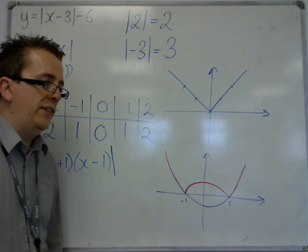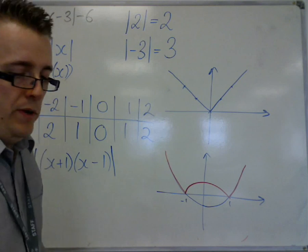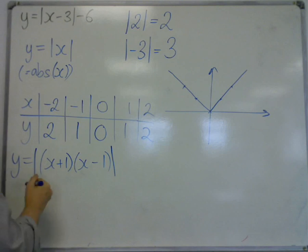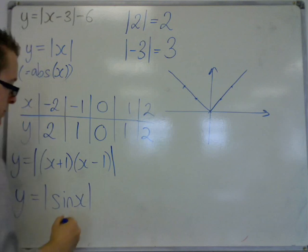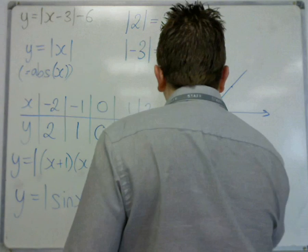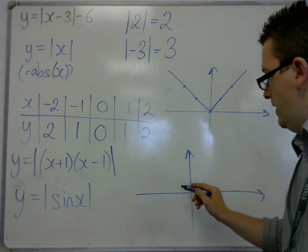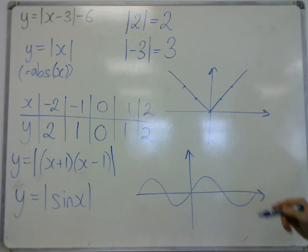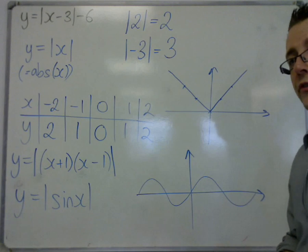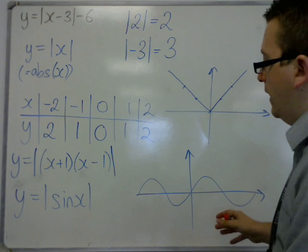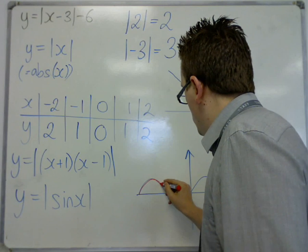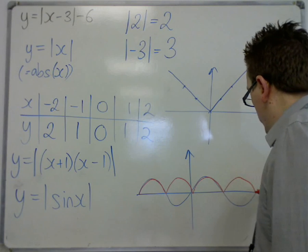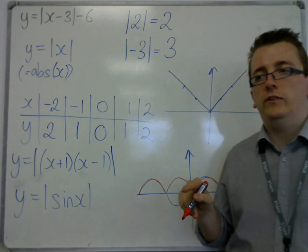Anything that is below the x-axis gets reflected up. So another example of this would be y equals mod of sine x, for example. So modulus of the trig function sine. Now, sine normally looks like this. So mod of sine, anything that is below the x-axis gets reflected up. So mod of sine would look like this, bouncing along the x-axis.